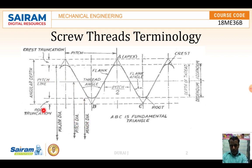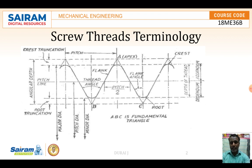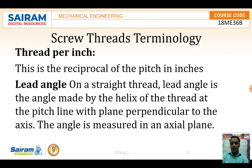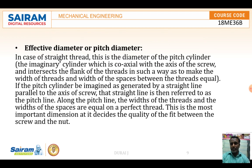The effective diameter is the location where two mating threads contact each other — where exactly the two flanks are mating so that power transmission takes place. In a straight thread, the effective diameter is the diameter of the pitch cylinder. The pitch cylinder is an imaginary cylinder, coaxial with the axis of the screw, which intersects the flanks of the thread in such a way as to make the width of the threads and the width of the spaces between threads equal.